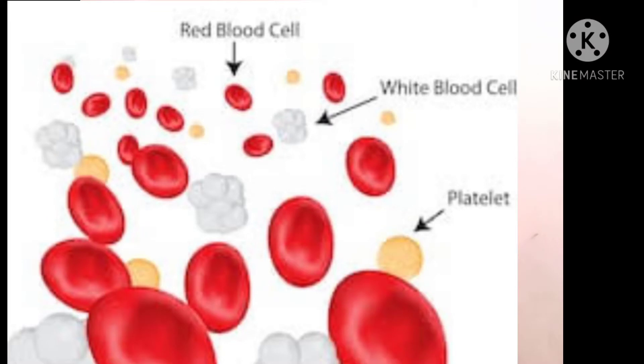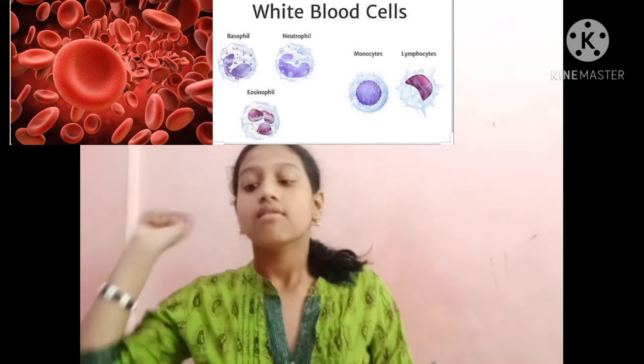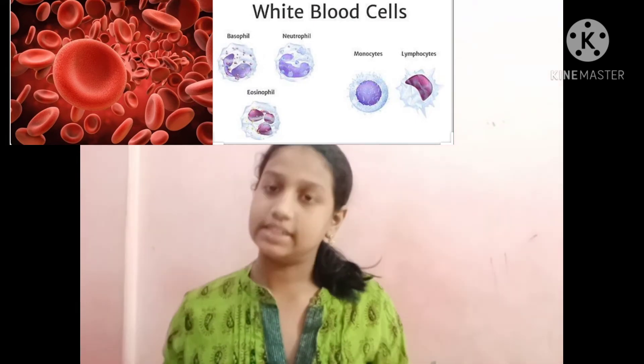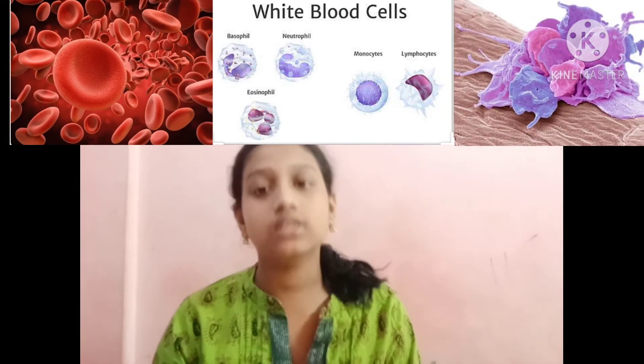Blood cells — three types of blood cells are present in the blood: red blood cells, white blood cells, and platelets. There are three types: first, RBCs or red blood cells; second, WBCs or white blood cells; and third, platelets.